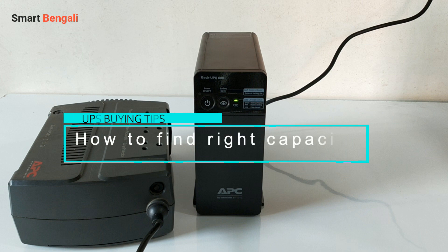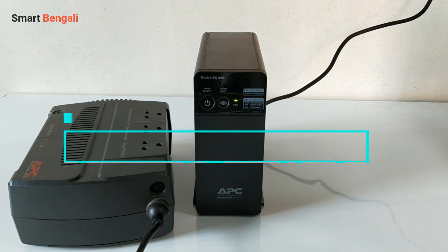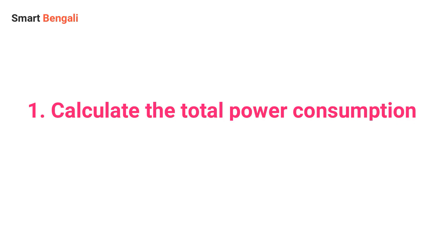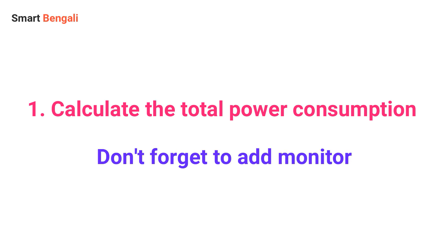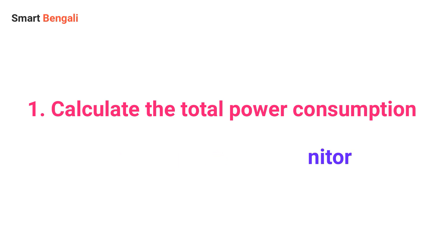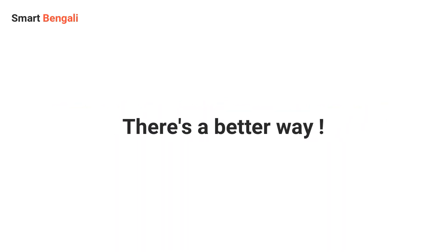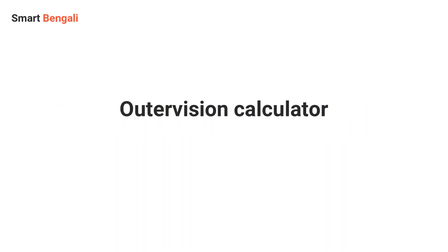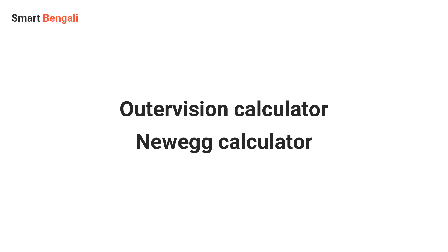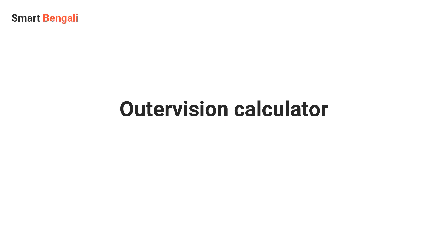First you need to calculate the total power consumption of your system including your monitor, because without a monitor you won't be able to operate your PC. You can manually calculate this power consumption by finding the power requirements of each component and adding them together, but there's a better way — you can take help from websites like OuterVision.com or the Newegg power calculator. Personally I prefer OuterVision.